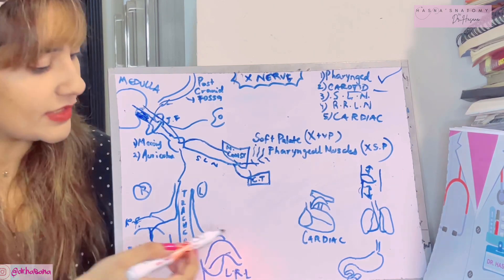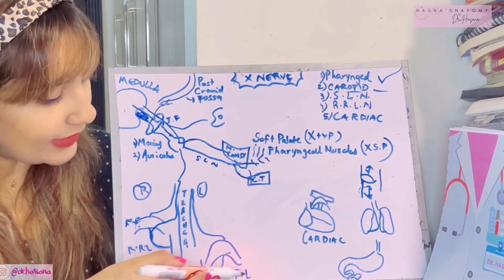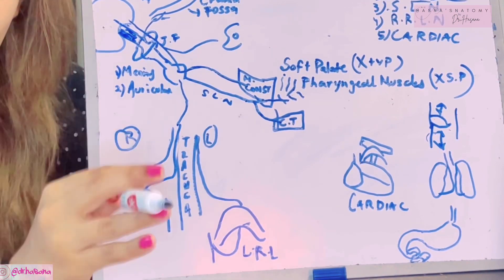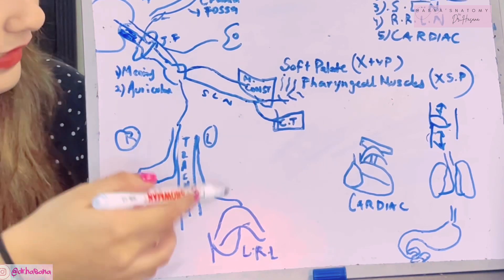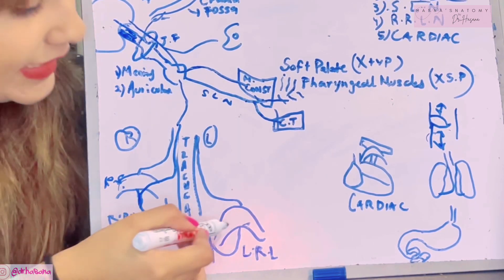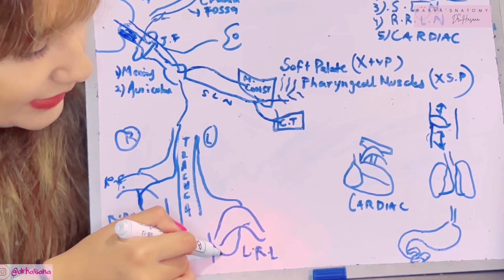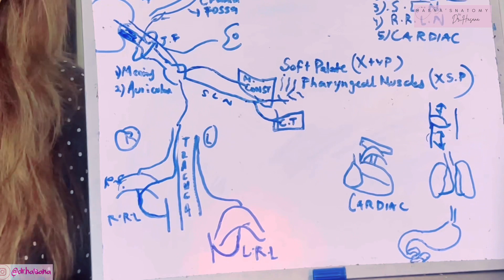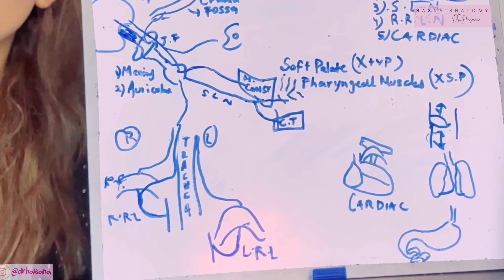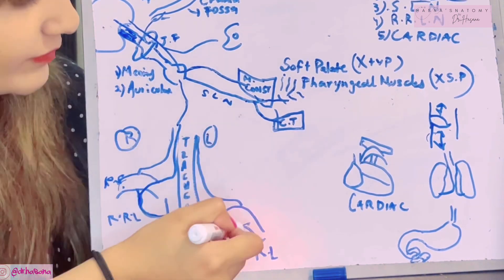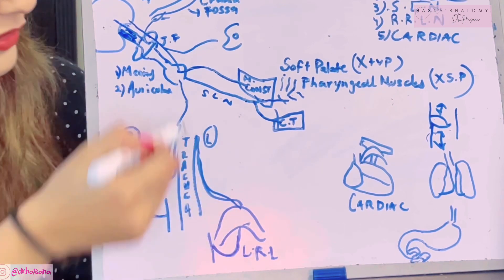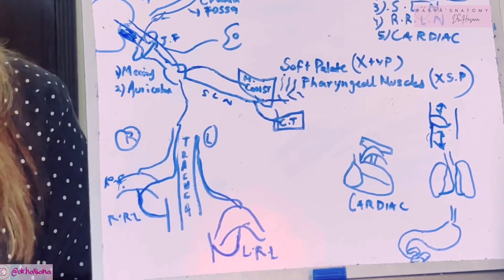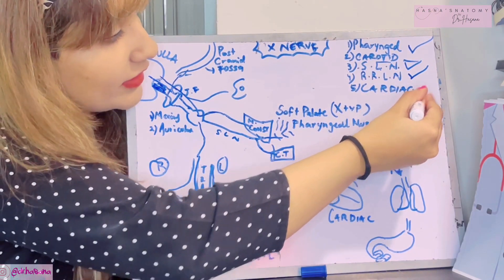The left recurrent laryngeal nerve arises not from the inferior ganglion but from the vagus nerve itself, lower down in the thorax. The landmark for where it arises is the aortic arch. It loops around the ligamentum arteriosum and goes back up to the tracheoesophageal groove, supplying the same structures as the right recurrent laryngeal nerve.